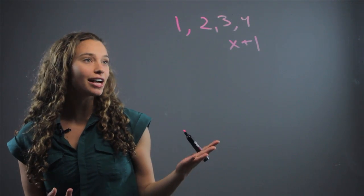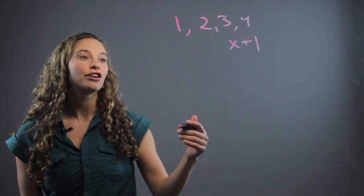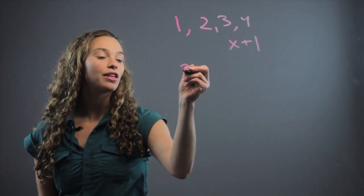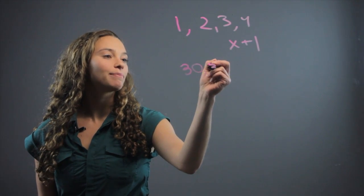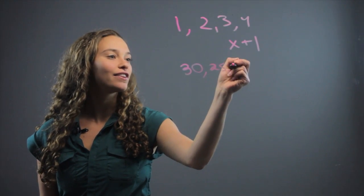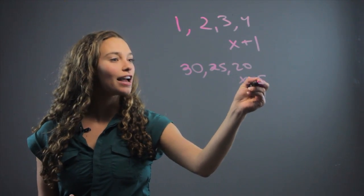You can also have more complex patterns. Perhaps they're going down: 30, 25, 20, then maybe it's x minus 5.